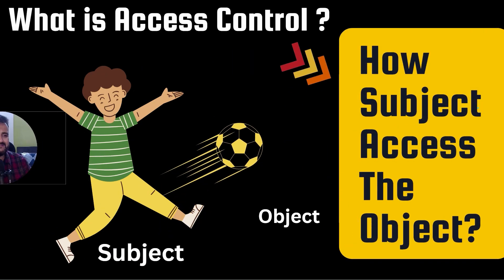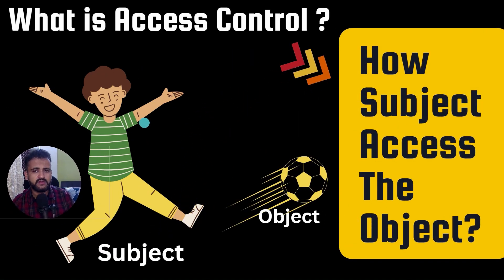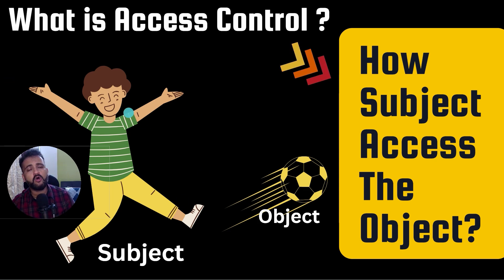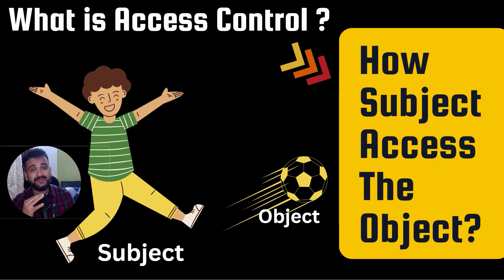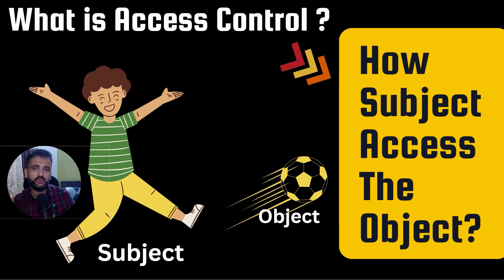What is access control? Access control, simply put, is how a subject accesses the object. A boy is the subject, the ball is the object, and how he accesses that ball is what access control is. In very simple terms, you define how a subject will eventually access the object — that is the basic understanding of access control.